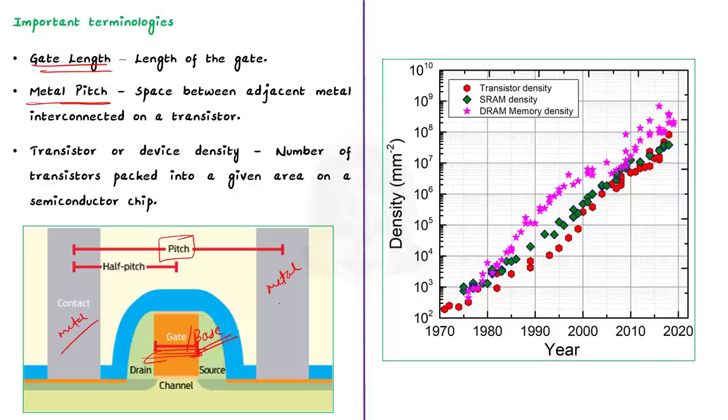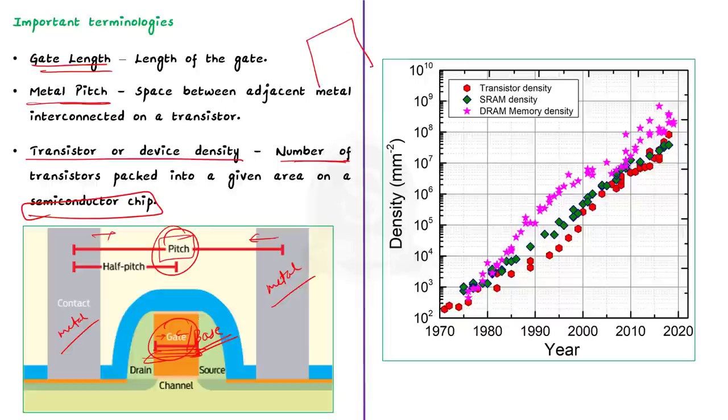Device density or transistor density refers to the number of transistors that can be packed into a given area on a semiconductor chip. The size of transistors have progressively shrunk over the years. That is, the gate length and the pitch has reduced over the years. The smaller a transistor becomes, the more of them can fit on a semiconductor chip. Now, imagine transistors are like tiny workers on a construction site. And they will help to build electronic devices like computers and phones. So, what happens when the transistors become smaller? When the transistors become smaller, it is like having tinier workers. These tiny workers take up less space on the construction site.